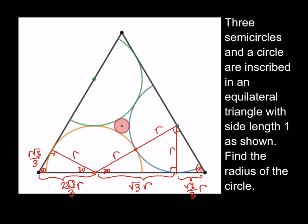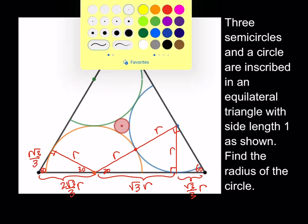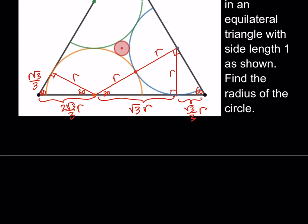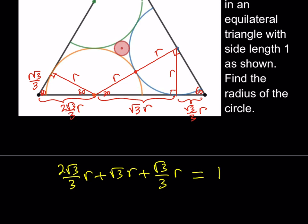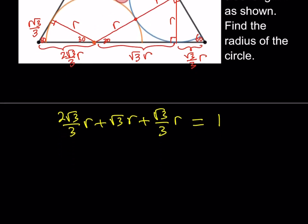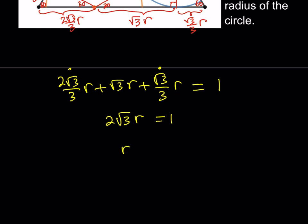I can find r because I know the side length for the triangle, which is 1. So: 2 root 3 over 3 times r, plus root 3 times r, plus root 3 over 3 times r — they all add up to 1. Adding the first and last terms gives root 3 times r, so we get 2 times root 3 times r equals 1. Therefore, r equals 1 over 2 root 3. Rationalizing the denominator by multiplying by root 3 top and bottom gives r equals root 3 divided by 6.